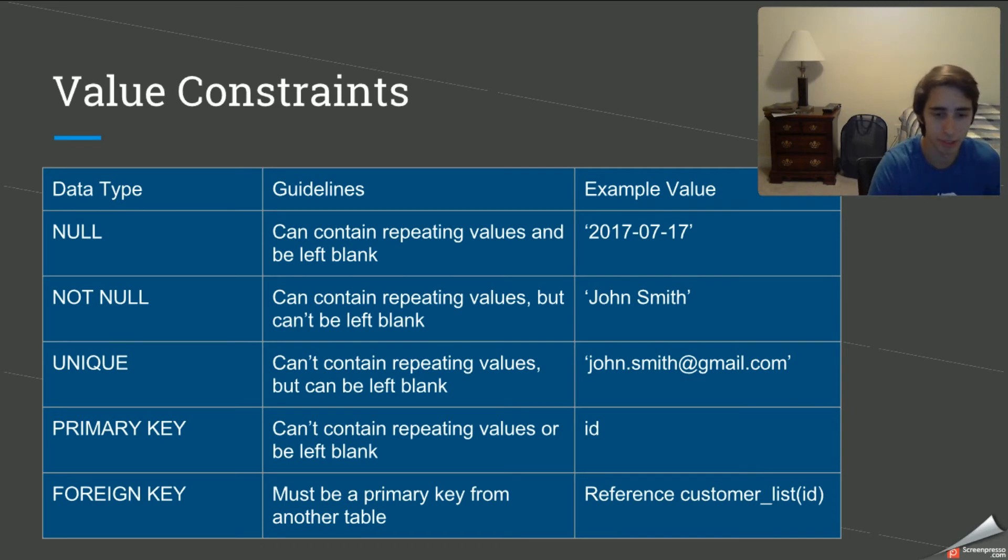And then we go into the UNIQUE, which means it cannot have repeating values. However, it can be left blank. So for example, let's say we're asking for an optional email. We need a unique email. We do not want repeating emails. We don't want people creating multiple accounts on our social media page with the same email. We need to have that as unique. However, it can be left blank in this sense because we're just asking for an email that's optional.